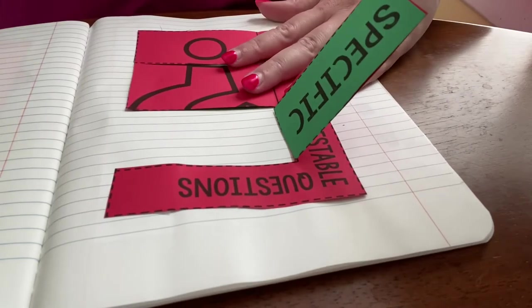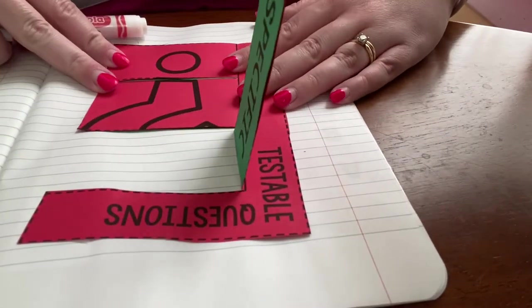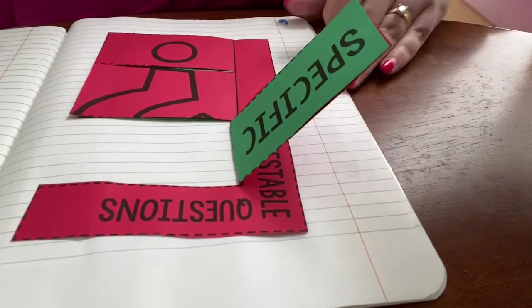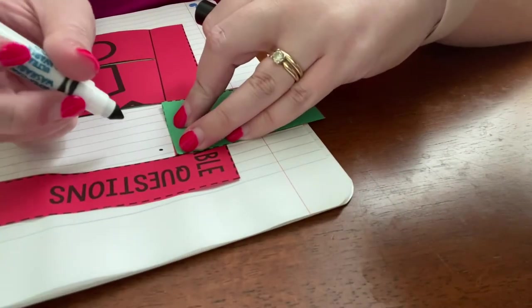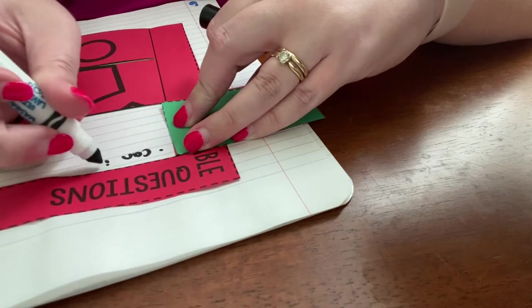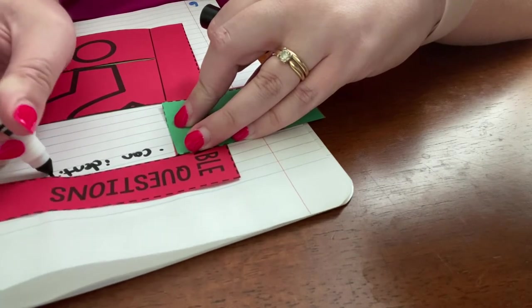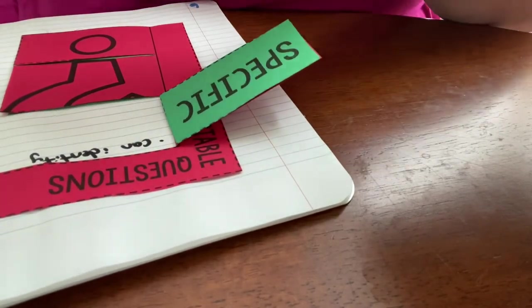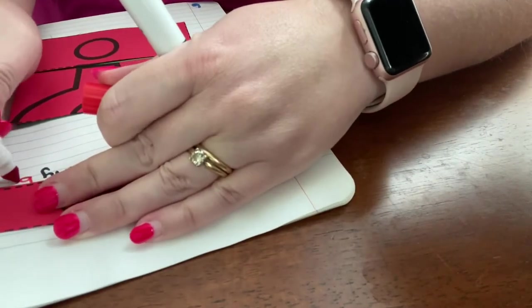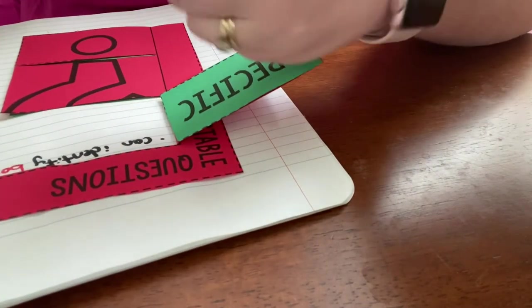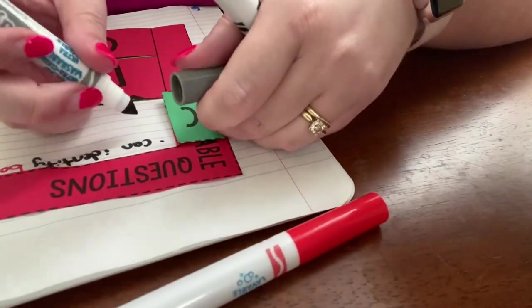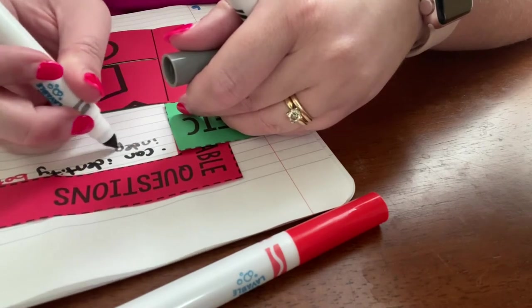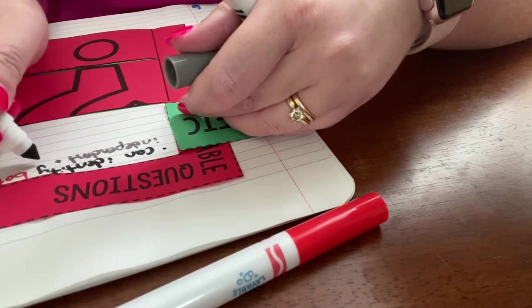So when a question is testable we're going to put the other two flaps down, leave open the first one. Specific. When it's specific we mean that it can identify - so I'm going to do a little bullet - can identify both, I'm going to put the 'both' in red, the independent and dependent variables which we are going to be talking about in another video. I'm doing that in gray: variables.